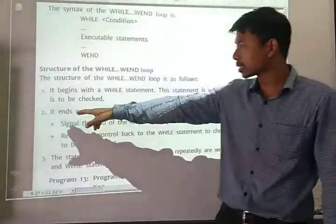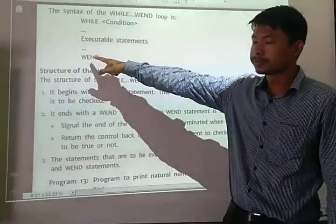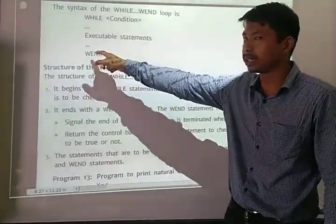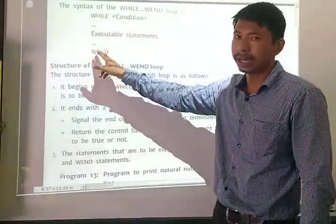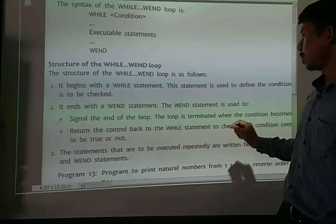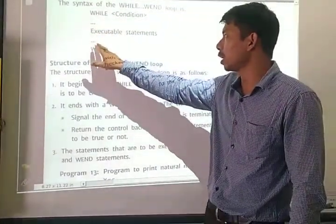Then the next - it ends with the WEND statement. What is the use of this WEND statement? It signals the end of the loop. The loop is terminated when the condition becomes false. So when this condition becomes false, the loop will end here.